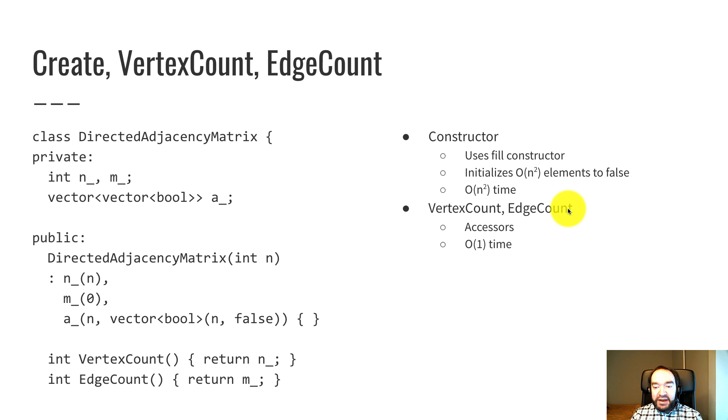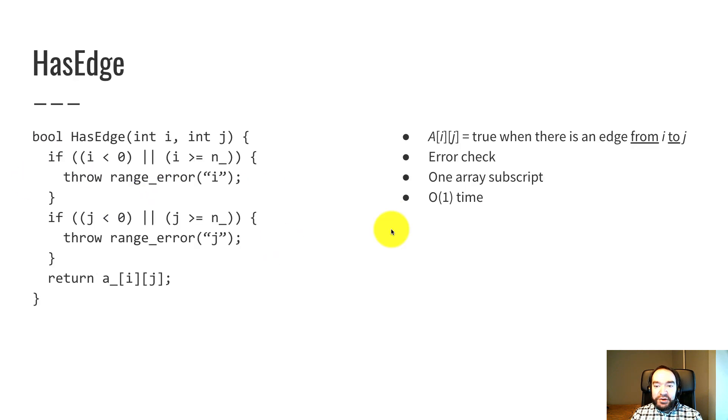Vertex count and edge count are just accessors that return n and m. They take constant time. Has edge is pretty simple. Has edge is supposed to return true if there is an edge from i to j. Remember the invariant a[i][j] is true when there's an edge from i to j. So I just need to look up a[i][j] and see whether it's true or not.